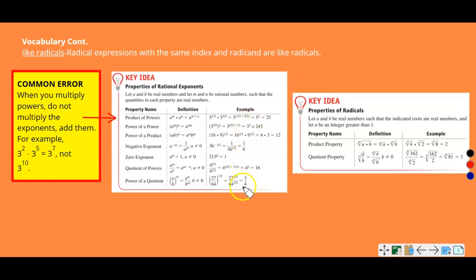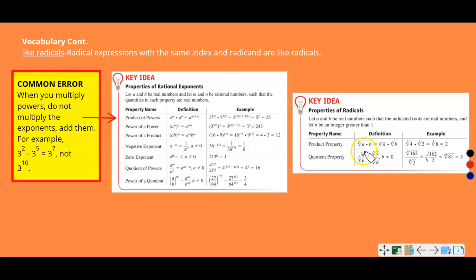Here are examples of these properties with rational exponents. Properties of radicals: let A and B be real numbers such that the indicated roots are real numbers, and let N be an integer greater than one. For the product property, if you have a radical with index N, you can split it up and write it as two separate radicals — the index stays the same when you separate them. For the quotient property, if you have division all under the same index N, you can write the numerator and denominator each under the index N as well.